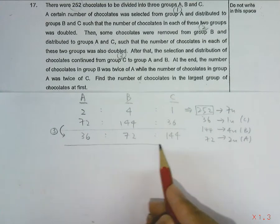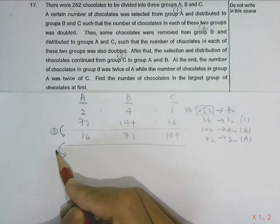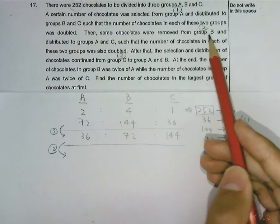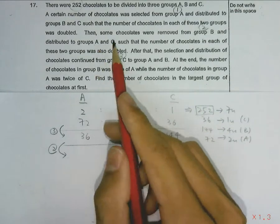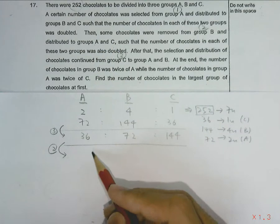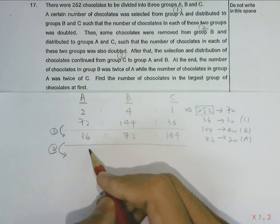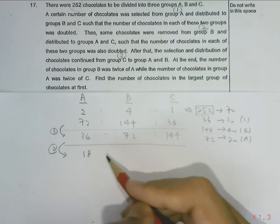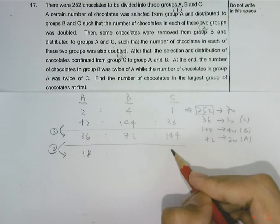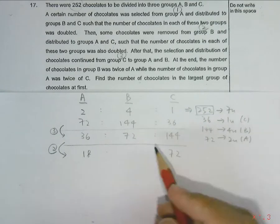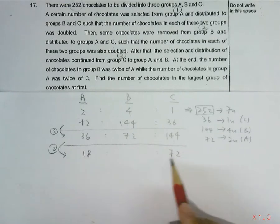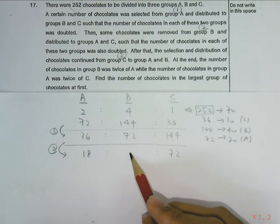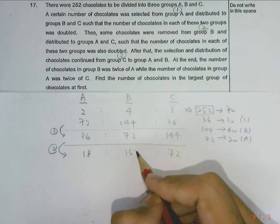Now if we work one more step backwards through the second step. In the second step, chocolates were taken from group B and given to A and C. Since A and C were doubled, we will have to find half of it. So half of 36 will give 18 and half of 144 will give 72. Since the total number of chocolates here will still have to be 252, we can find the number of chocolates B has will be 162.